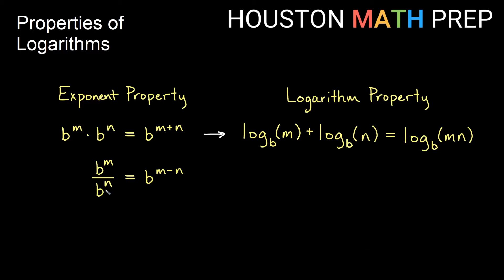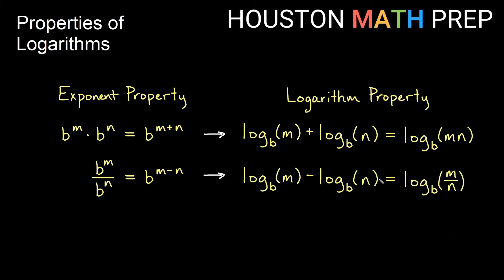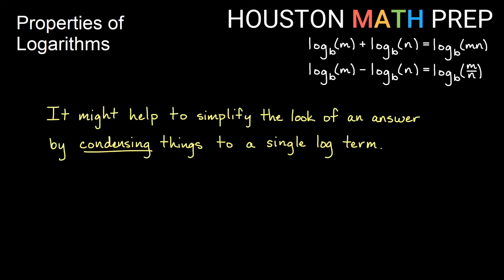The opposite property: if we have a base to some power divided by the same base to another power, then we can subtract the exponents. So division between exponentials with the same base becomes subtraction in a single exponential. Similarly, subtraction between two logarithms with the same base becomes division within a single logarithm. We can use these properties to condense multiple log terms into a single log term.